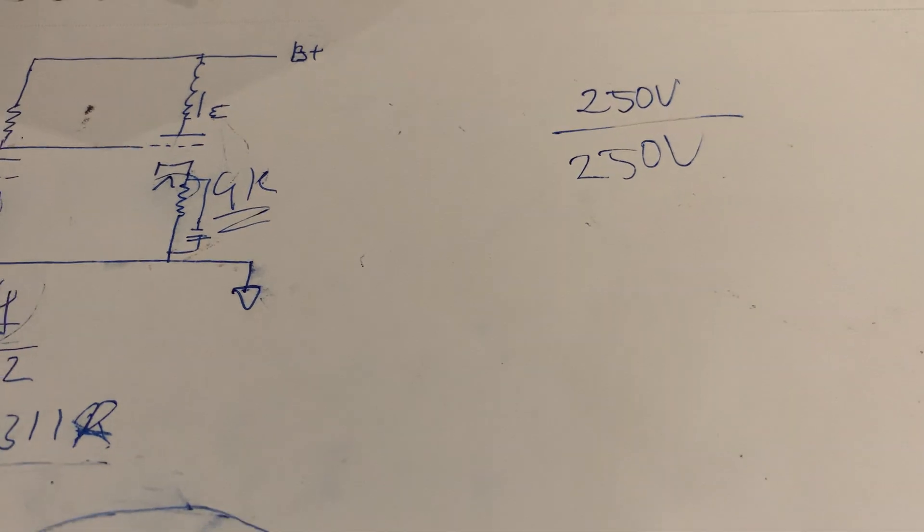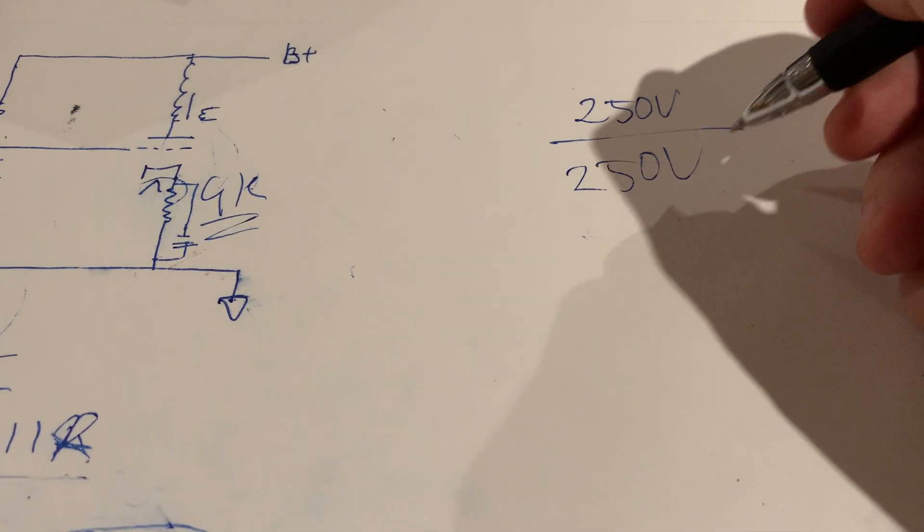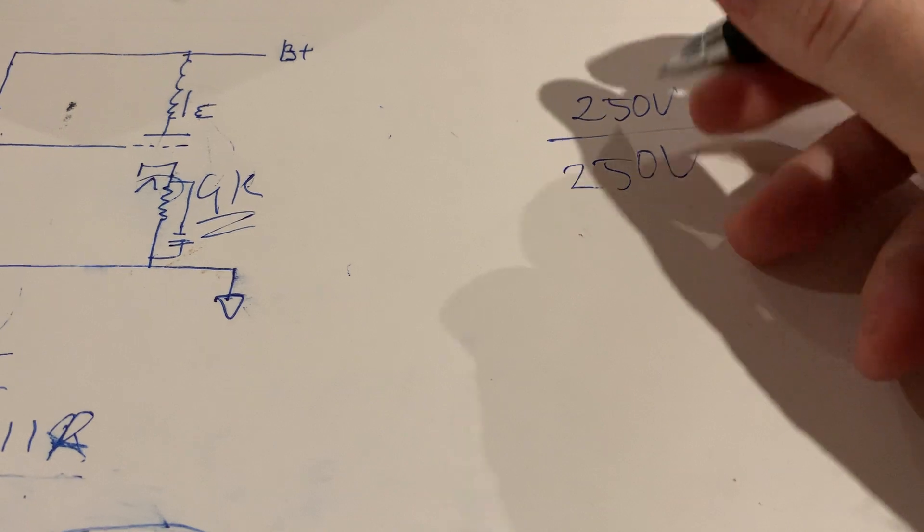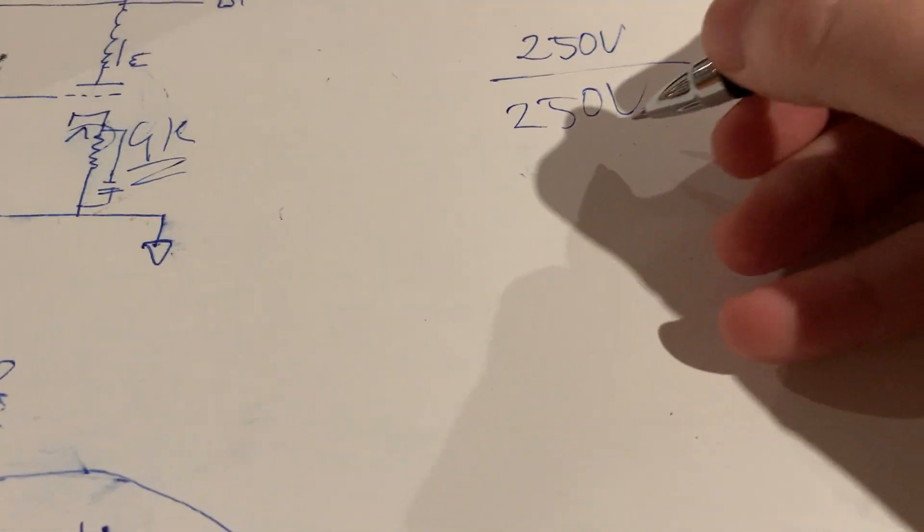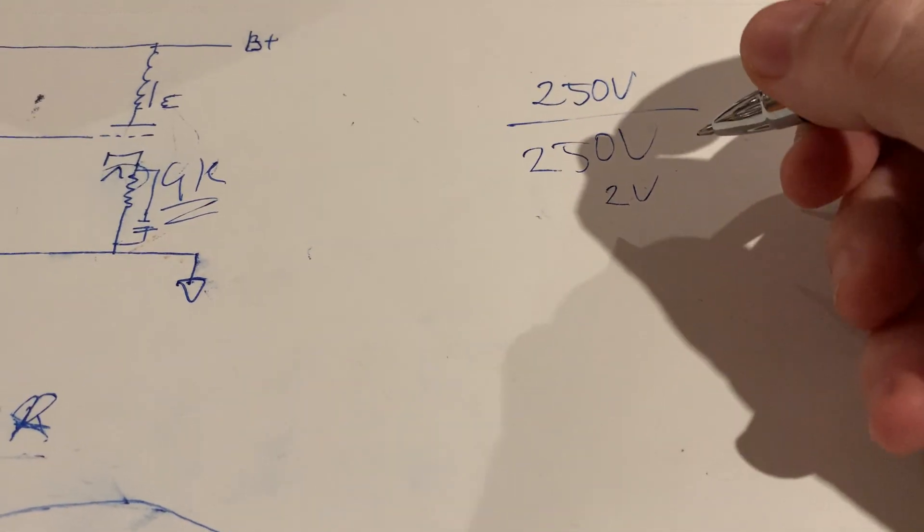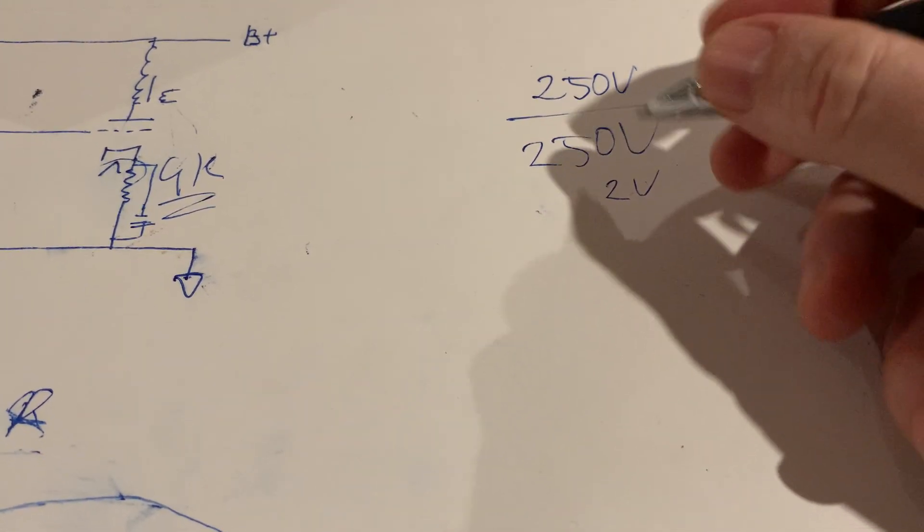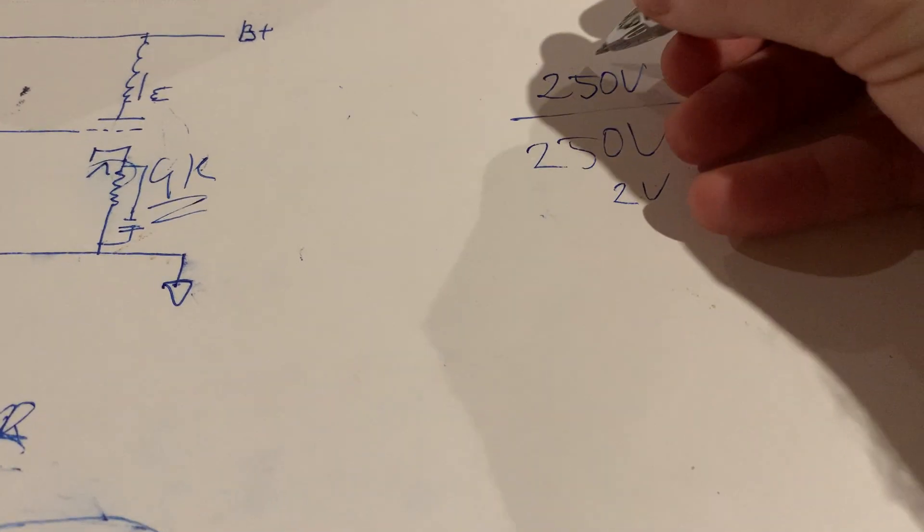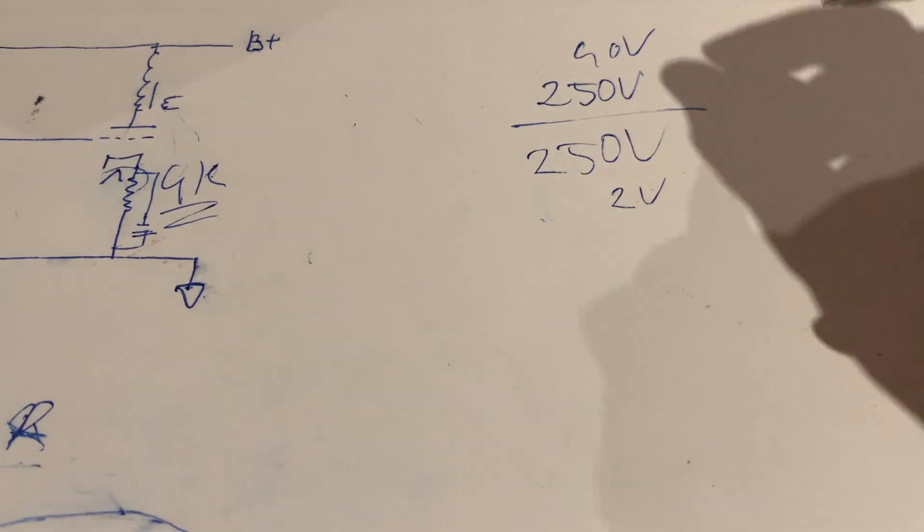Plus 250 volts for the 6SL7 plate plus like a couple of volts for the grid for the bias of the 6SL7, maybe let's count like 2 volts for that, and the bias for the 45s is about 40 volts.